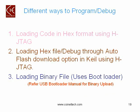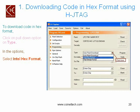Let me explain the options that H JTAG server provides for programming or debugging modes. The first option is loading code in hex format using H JTAG. The second option is loading a hex file or debugging through the Auto Flash Download option in Keil using H JTAG. The third option is loading a binary file using a bootloader. In this tutorial, we will cover the first two options; for the third option, refer to the USB Bootloader manual for binary upload.